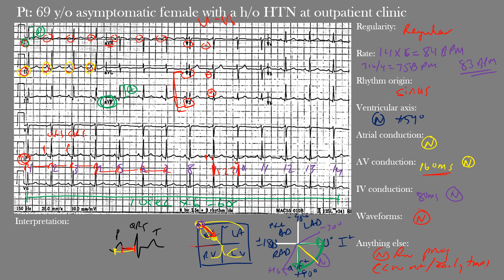Our final interpretation: regular rhythm with sinus origin, rate of 83 beats per minute, normal ventricular axis, normal atrial, AV, and intraventricular conduction, no abnormal waveforms, and R-wave progression and transitional zone generally within normal limits. This EKG shows normal sinus rhythm. Great job if you were able to get that on your own. In conclusion, our 69-year-old asymptomatic female with a history of hypertension has an EKG showing normal sinus rhythm.